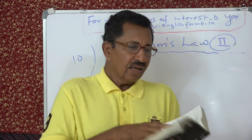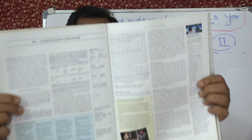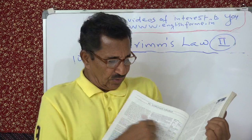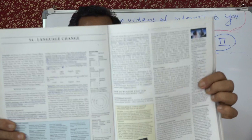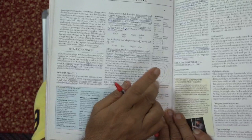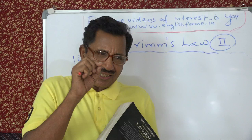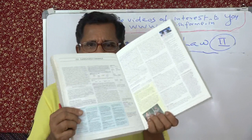Here on page 330, the title is 'Language Change'. You can see three circles drawn there. According to David Crystal, what is important is the circular relationship between the correspondences, and he gives that diagram here. I will draw it on the board.